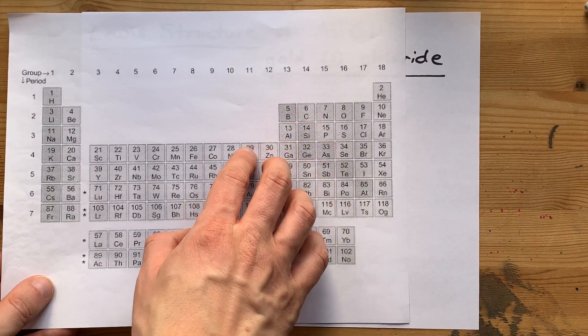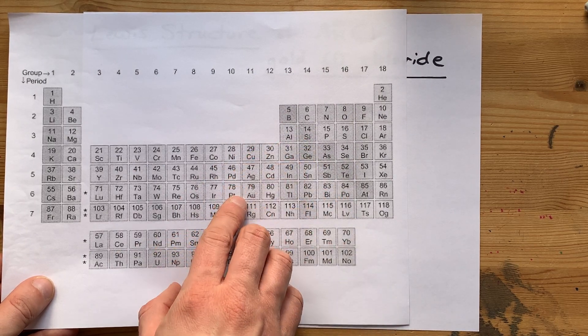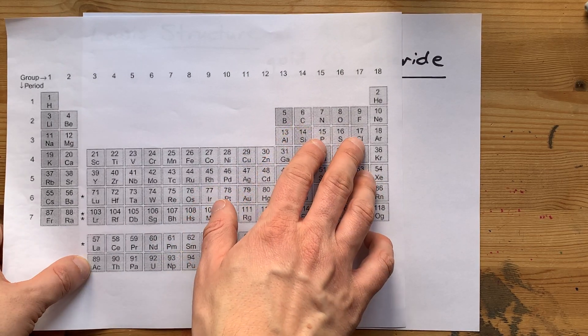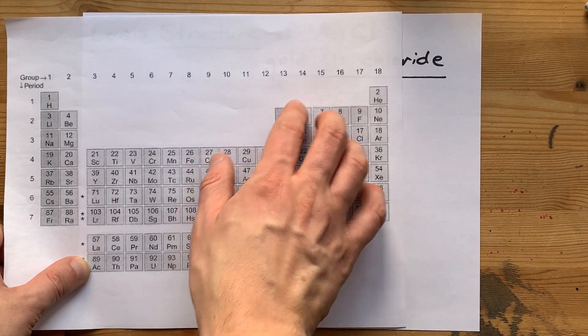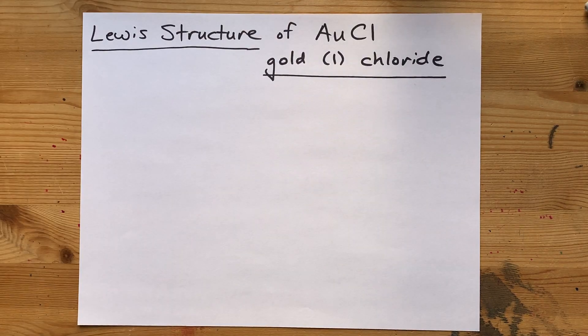I know it's a metal because it comes from the left-hand side of this staircase here. And chlorine is a non-metal. I know that because it comes from the right-hand side of that staircase.